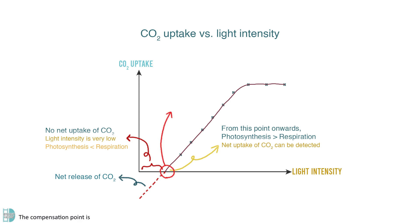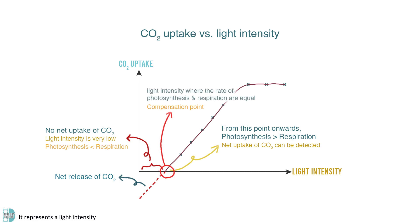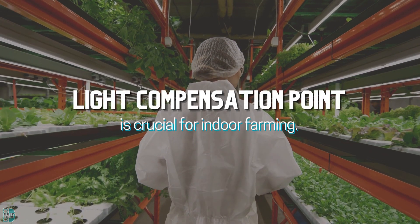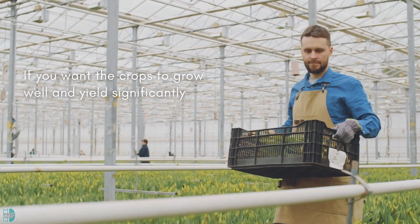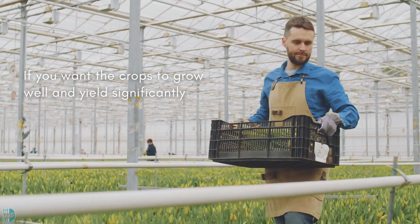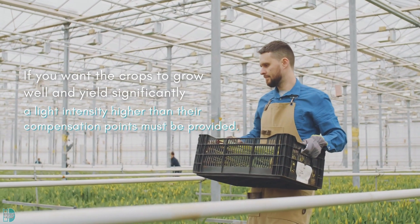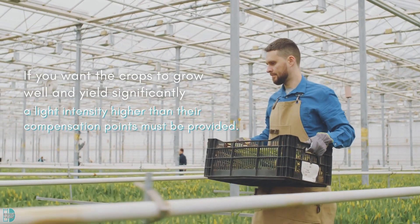The compensation point is when the line intersects with the y-axis. It represents a light intensity where the rates of the two processes are equal — there is no net exchange of carbon dioxide. The compensation point is crucial for indoor farming. If you want the crops to grow well and yield significantly, a light intensity higher than its compensation point must be provided.